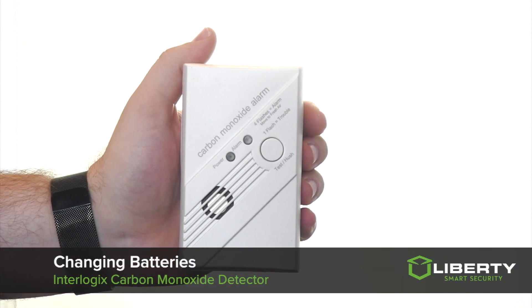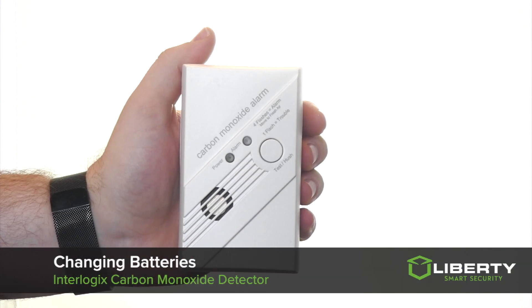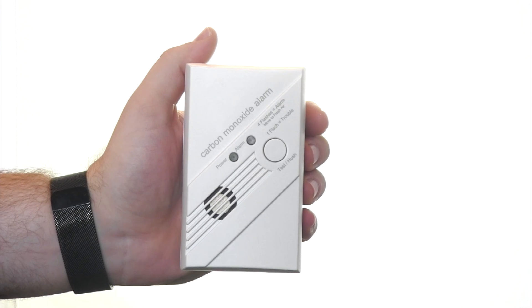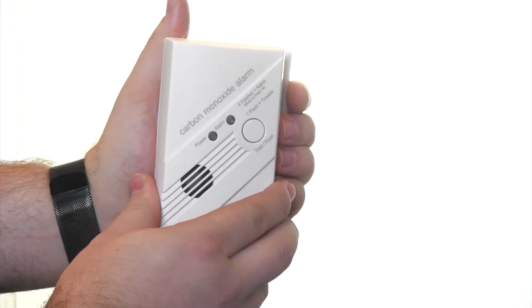To access the batteries on the Interlogix carbon monoxide alarm, we'll want to remove it from the wall mount. To do so, you'll want to slide to the left.